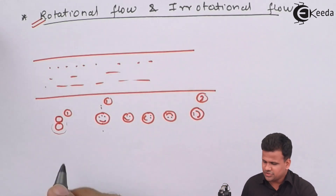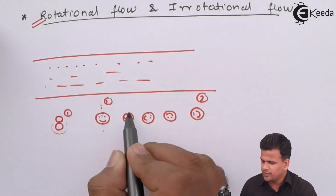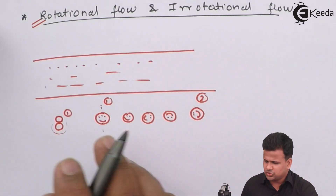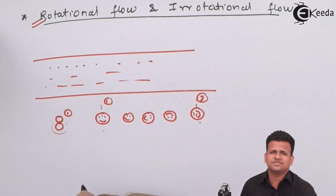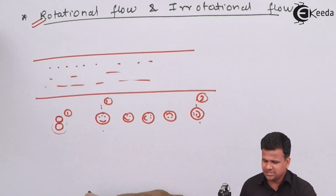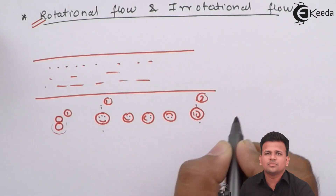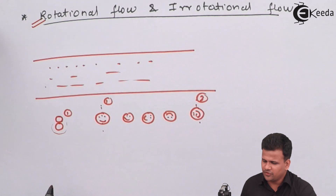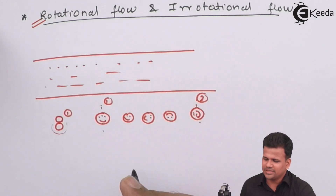Rotational flow can be defined as a flow in which a molecule rolls over a surface or over another molecule. The kind of motion involved is called general plane motion, in which there is both linear motion and rotational motion. So this kind is called rotational flow — the molecule is both flowing and rotating along its axis.